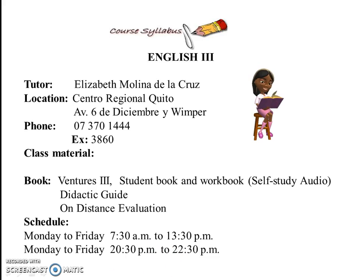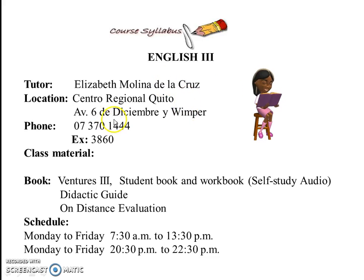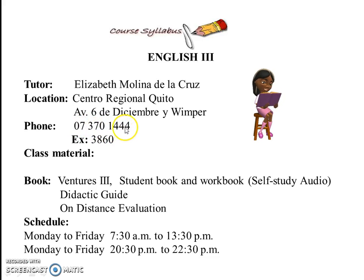This is my information. I am Elizabeth Maldina de la Cruz, I am Central Regional Quito. This is the address, this is the phone number, and this is the extension. You can call this number and then ask for this extension and I'll be there to get in touch with you.